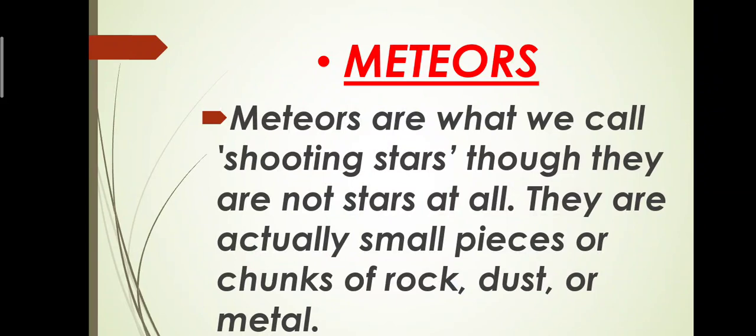When meteors enter we see flashes of light in the night sky usually lasting just a few seconds. The meteors only last for a few seconds. When they shoot through the atmosphere as bright flashes of light we call them meteors, and when they reach the ground we call them meteorites.